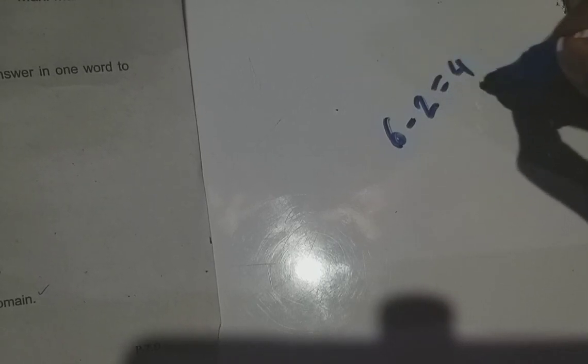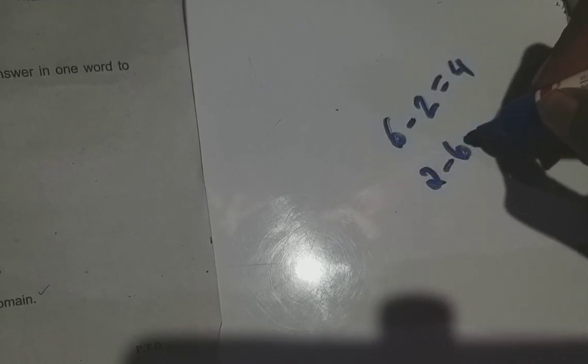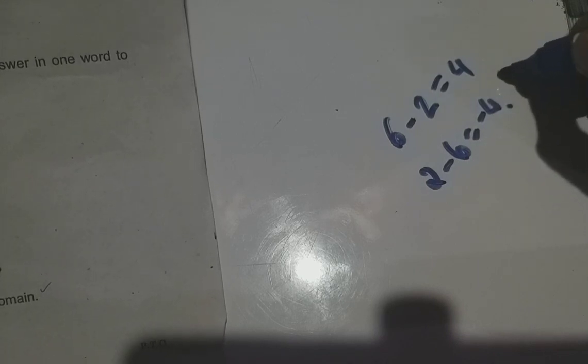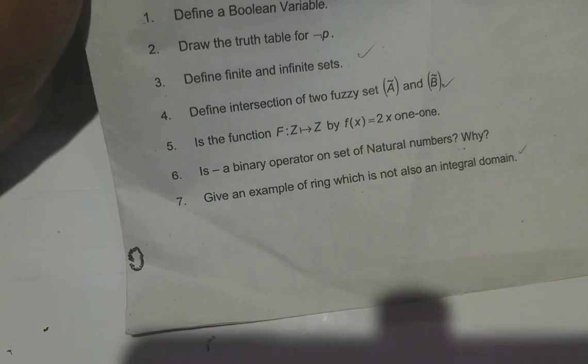Question 6: 6 minus 2 is 4, but 2 minus 6 is minus 4. This minus 4 does not belong to N. Since this number does not belong to N, it is not a binary operator.